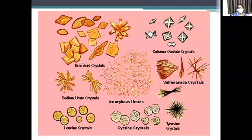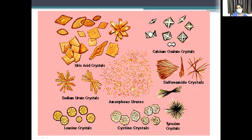In summary, acid urine crystals are: amorphous urate, uric acid, calcium oxalate (envelope or dumbbell shape), cysteine, tyrosine, leucine, hippuric acid, and sulfonamide crystals. Alkaline urine crystals are: triple phosphate (coffin-lid), dicalcium phosphate, calcium carbonate, ammonium biurate (thorn apple), and cholesterol (rhomboid).